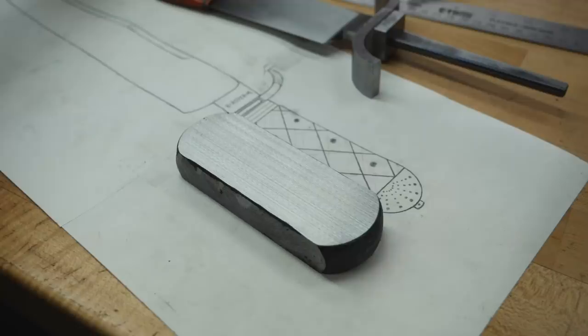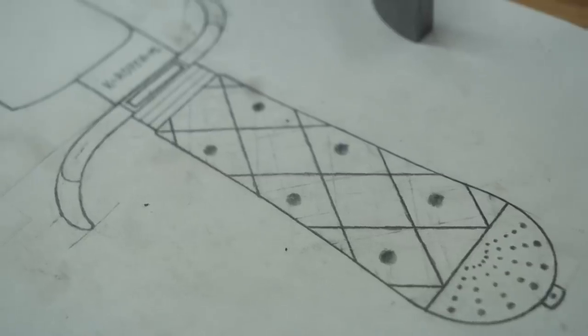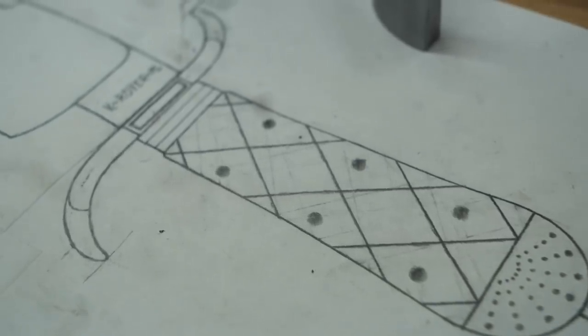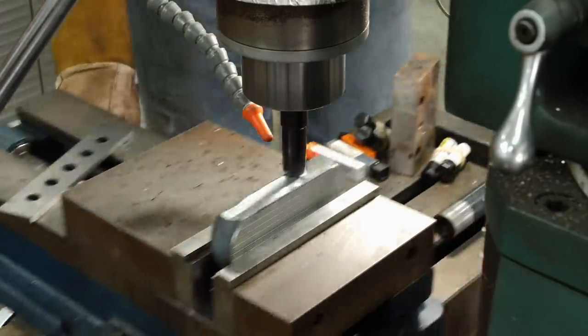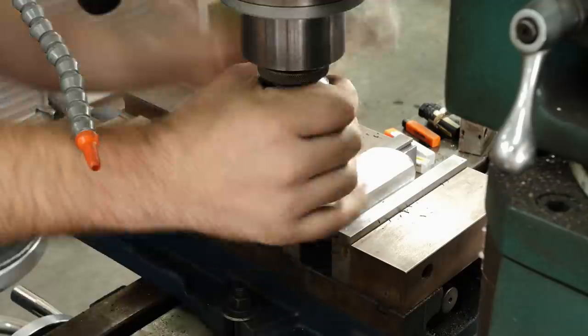The handle on this Bowie is going to be a frame handle with integral rear bolsters. So I start with a piece of steel that's about three quarters of an inch thick. That'll give me enough material to have our integral bolsters on the pommel end of the handle.